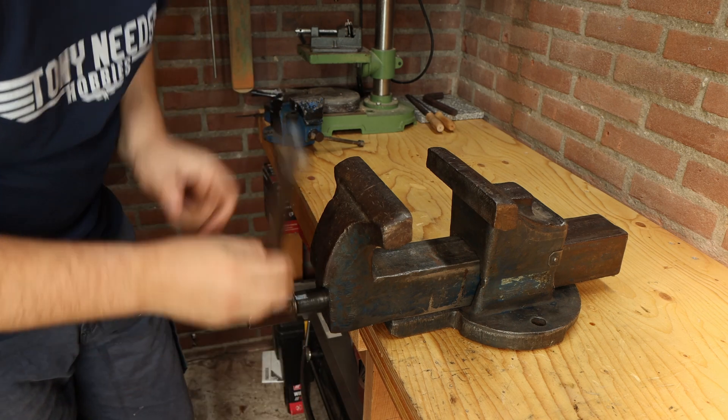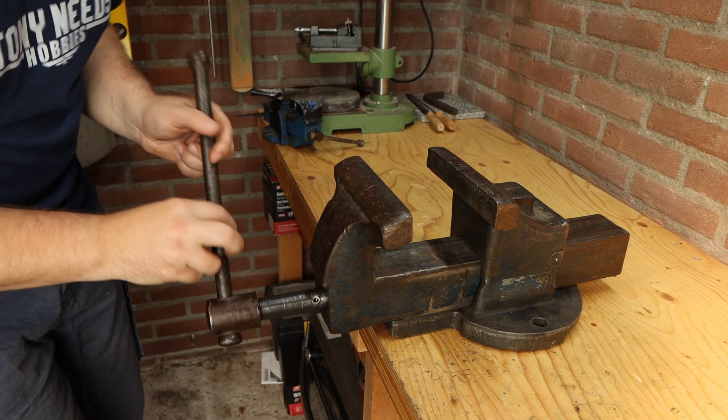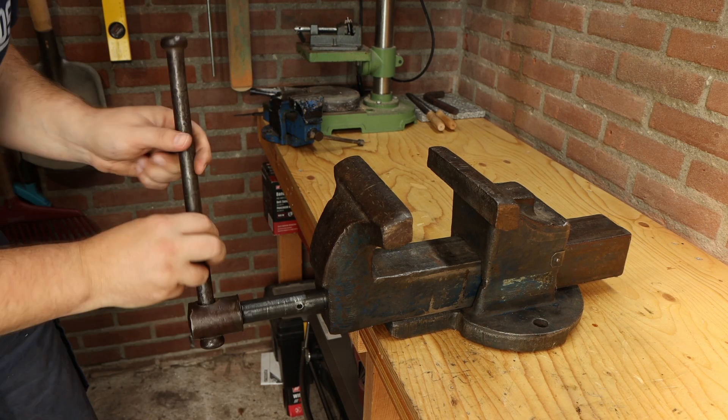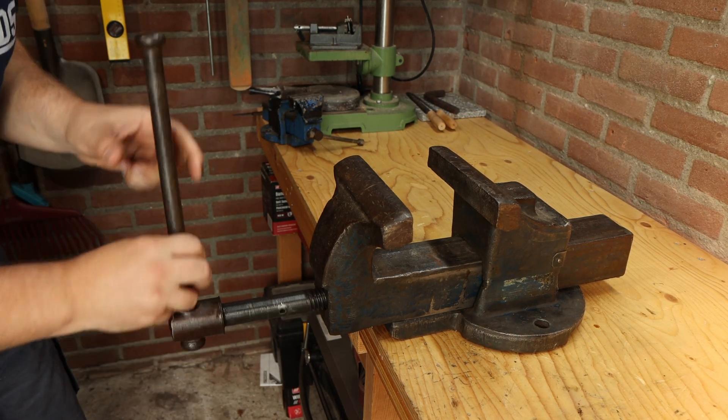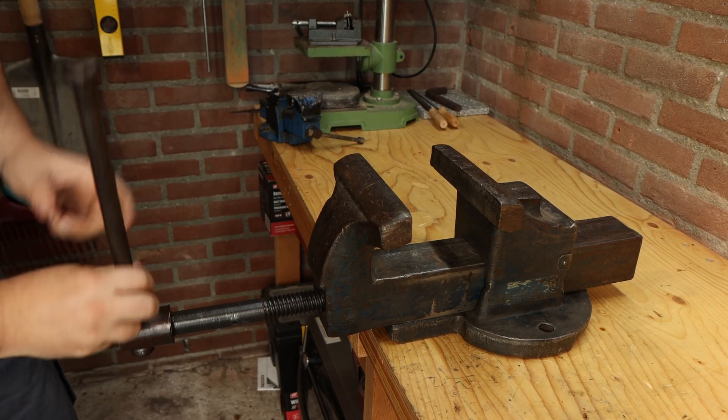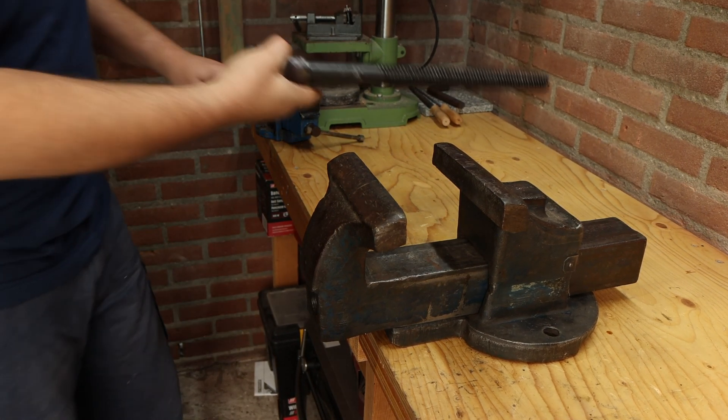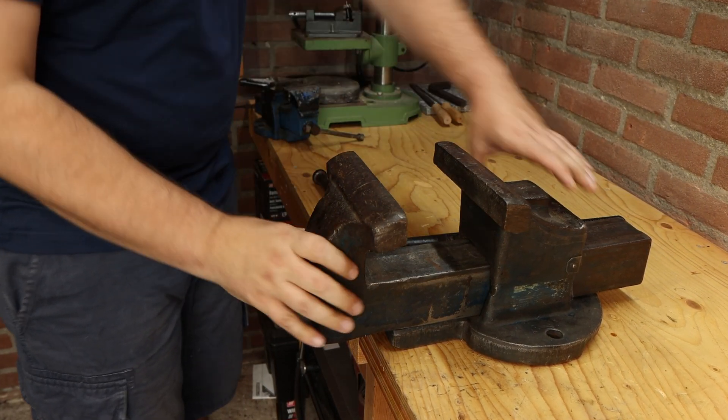But first let's disassemble everything. This vice is quite easy to take apart. It only consists of three main parts: the base with a fixed nut, the slide, and the screw. To take it apart I just have to unscrew the assembly until the screw comes out and all parts are separable.